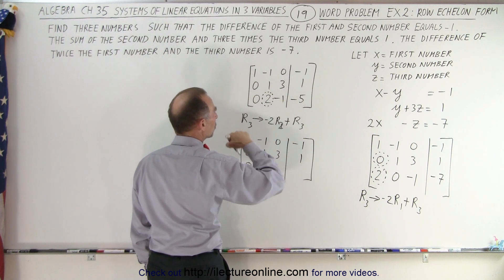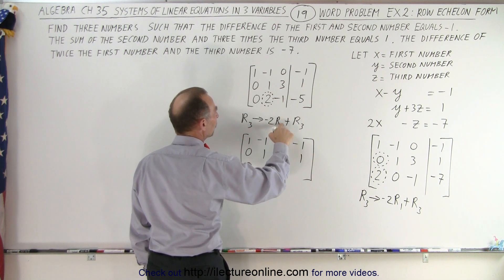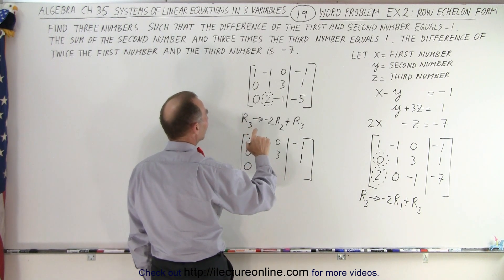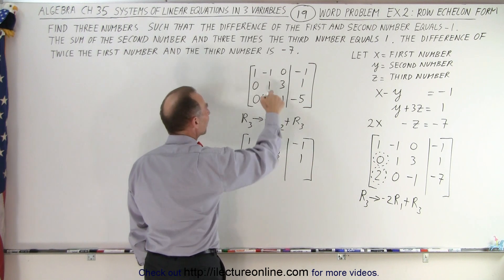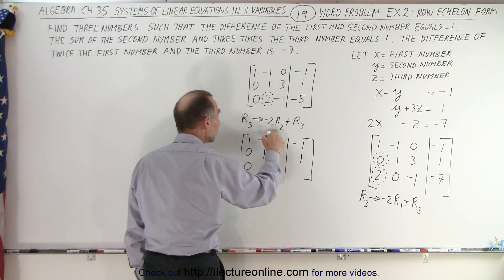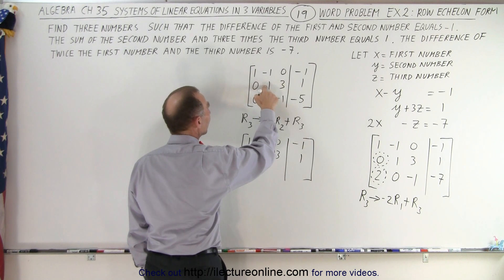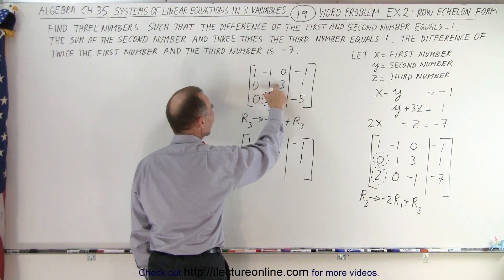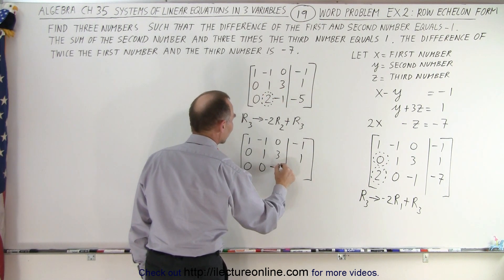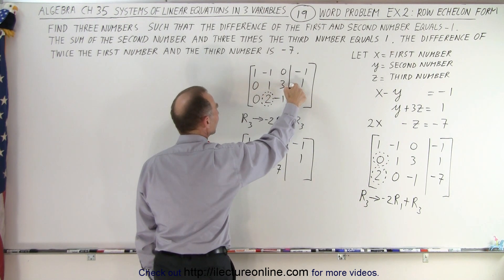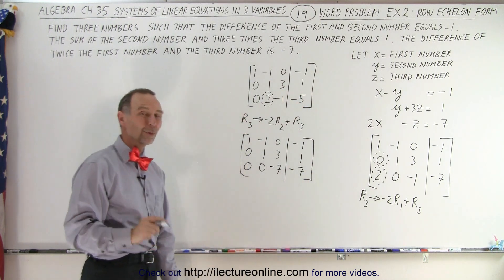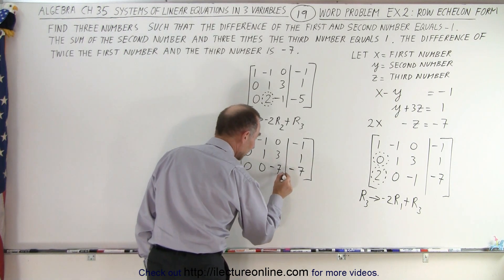Wait — that should be the second row, because that's the row with the one in it for column two. So I multiply negative two times row two and add it to row three. Negative two times one is negative two, added to two is zero. Negative two times three is negative six, added to negative one is negative seven. Negative two times one is negative two, added to negative five is negative seven.